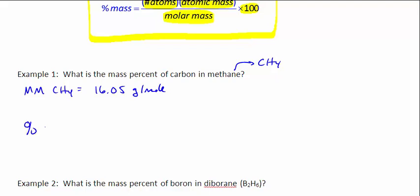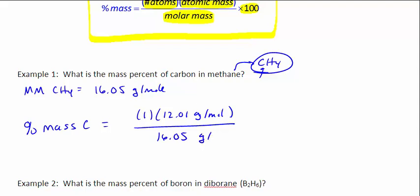So the percent mass of carbon in this particular case would be—there's one carbon atom in this molecule. Do you see it right there? One carbon atom. It has a mass of 12.01 grams per mole. The total mass is 16.05 grams per mole. And of course, we've got to multiply by 100. So if we do all this math, we get 74.83 percent. That means 74.83 percent of this molecule's mass comes from the one carbon atom that's in there.